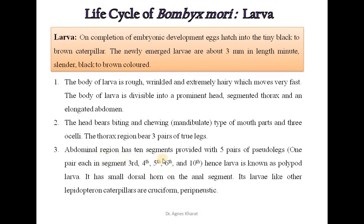The thorax region bears 3 pairs of true legs. The abdominal region has 10 segments provided with 5 pairs of pseudolegs, one pair each on segments 3rd, 4th, 5th, 6th and 10th. Hence, this larva is known as a polypod larva. It has a small dorsal horn on the anal segment. Its larva, like other Lepidopteran caterpillars, is cruciform and peripneustic.